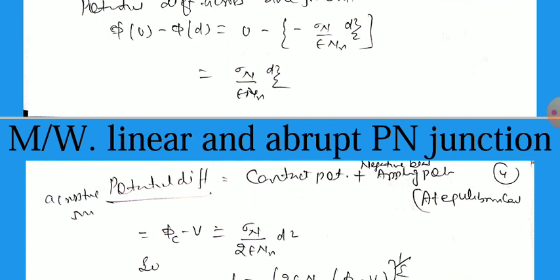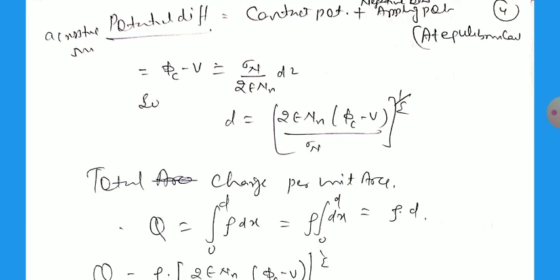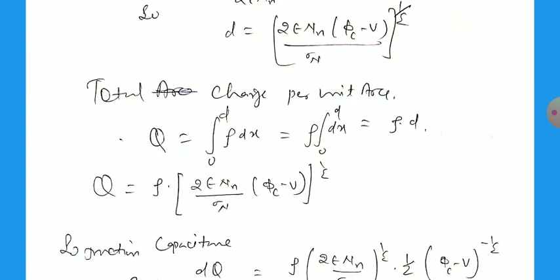The potential difference across this junction is contact potential minus the directly applied potential, phi c minus V0 or V as earlier in the linear graded junction. So phi c minus V equals sigma N by twice epsilon N times d square. Therefore d equals twice epsilon N times phi c minus V by sigma N power half. The total charge on any side per unit area, q equals 0 to d rho dx, and rho is constant. So q equals rho times d. We substitute the value of d to get the charge per unit area. So q equals rho multiplied by twice epsilon N times phi c minus V power half.